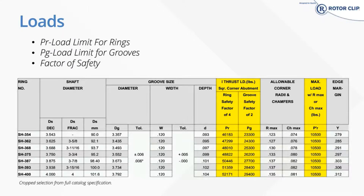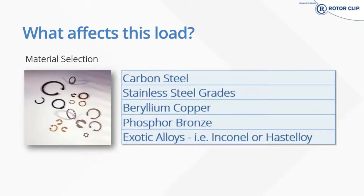Since PR and PG are a function of the material strength of the ring or groove, these values are affected by material type. The catalog data listed is for carbon steel and for stainless steel. Scaling factors are used for other materials such as beryllium copper and phosphor bronze due to their lower PSI. The easiest way to handle this without running through formulas is to multiply the catalog listed values by 0.75 for beryllium copper and phosphor bronze. The back of our catalog lists correction factors for other materials as well.